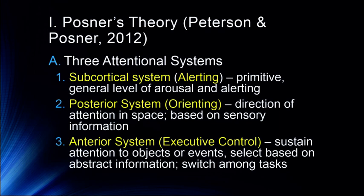Finally, we have an anterior system based in the frontal lobes, which is the executive control network. Its job is to sustain our attention to objects or events, keep it focused, select information based on abstract information such as meaning, and switch among tasks. These are the three networks Posner proposed, with a great deal of supporting evidence. There's a great task that tests all three called the attentional network task, or the ANT.